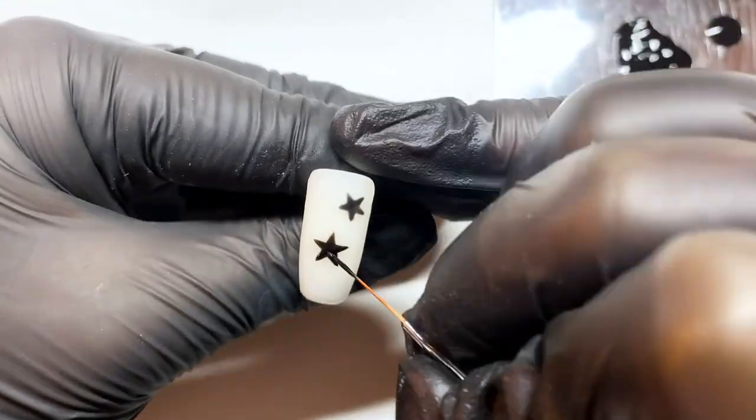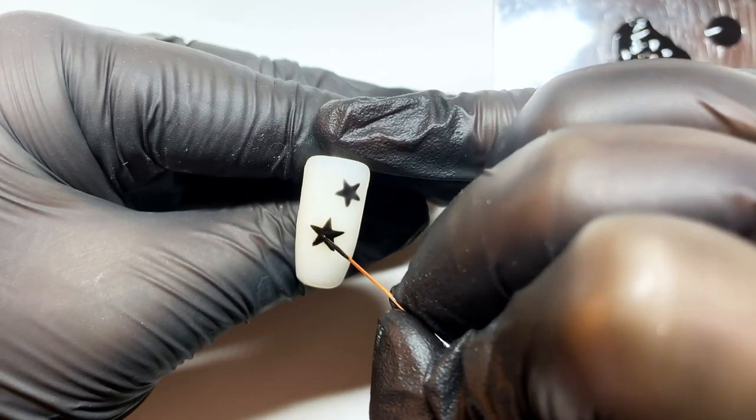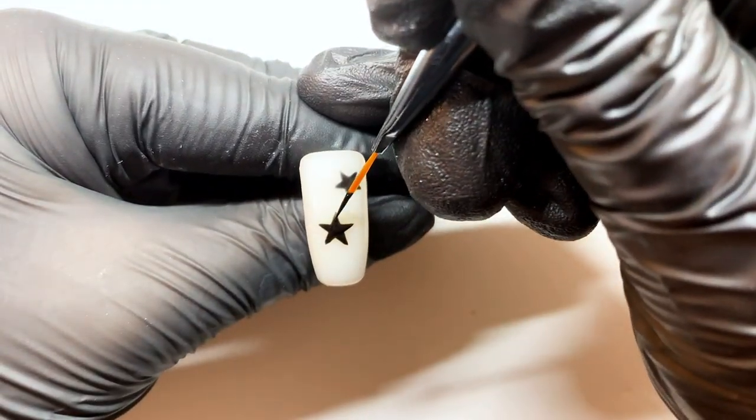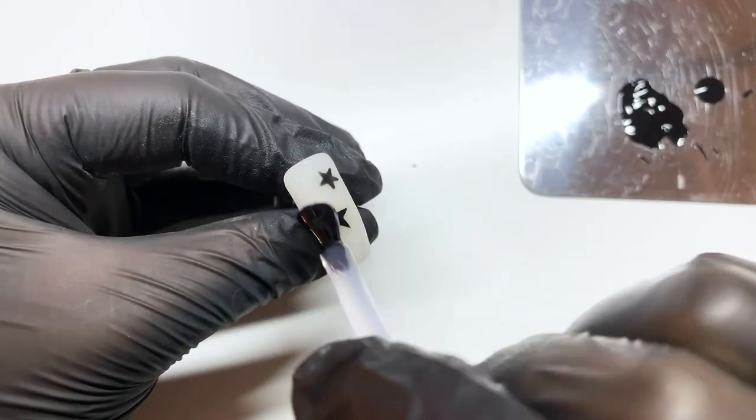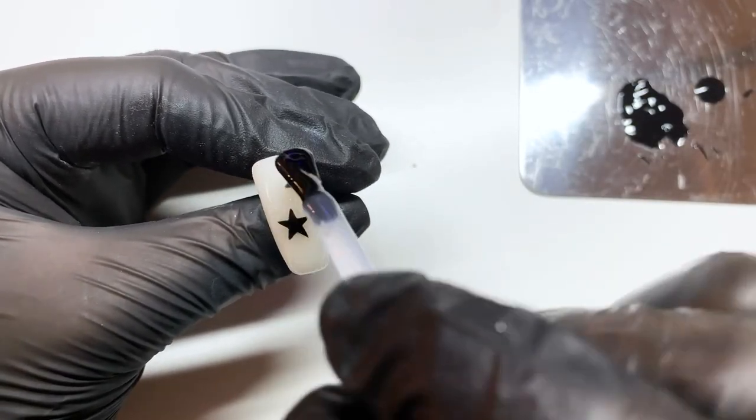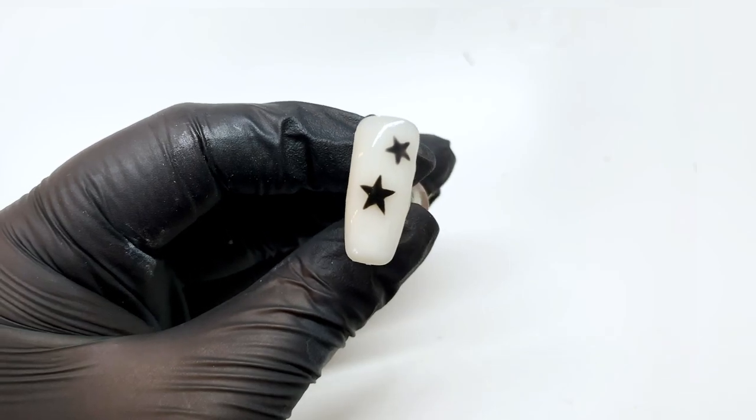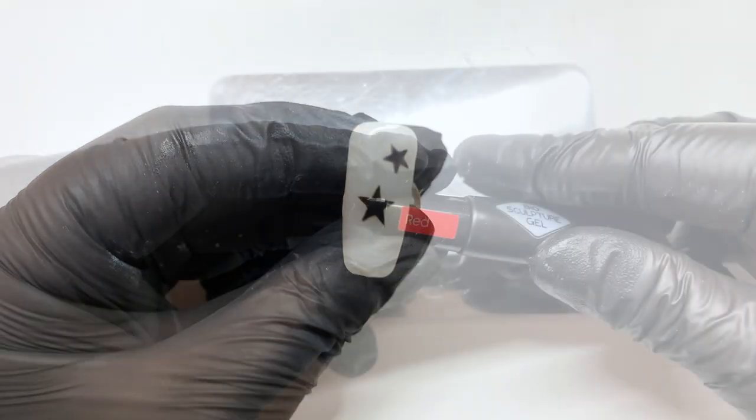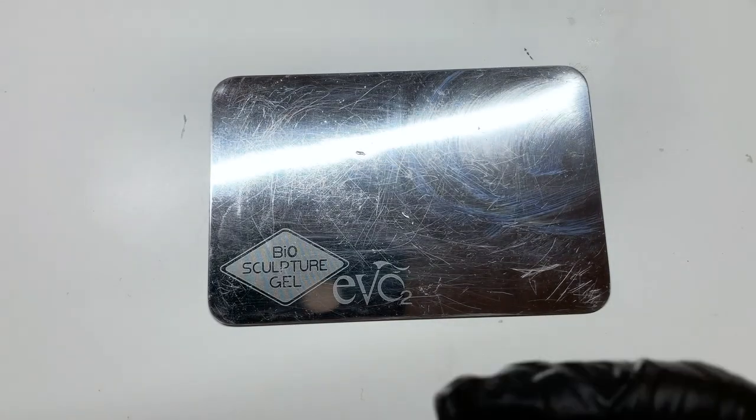Once I am happy with my design I'm going to cure for 60 seconds under the lamp, then I'm just going to take the gloss top coat and do a layer and then cure for 30 seconds. And there you have it, normal gel versus high pigment gel.